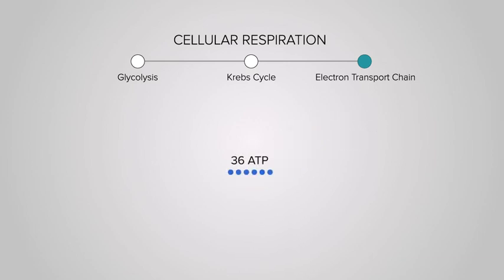For every glucose molecule, the process of cellular respiration produces about 36 ATP molecules that can be used for energy inside of cells.